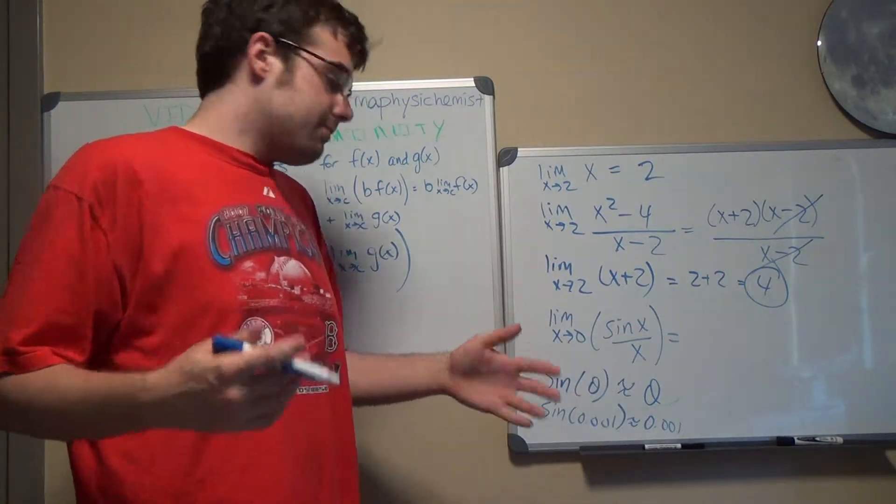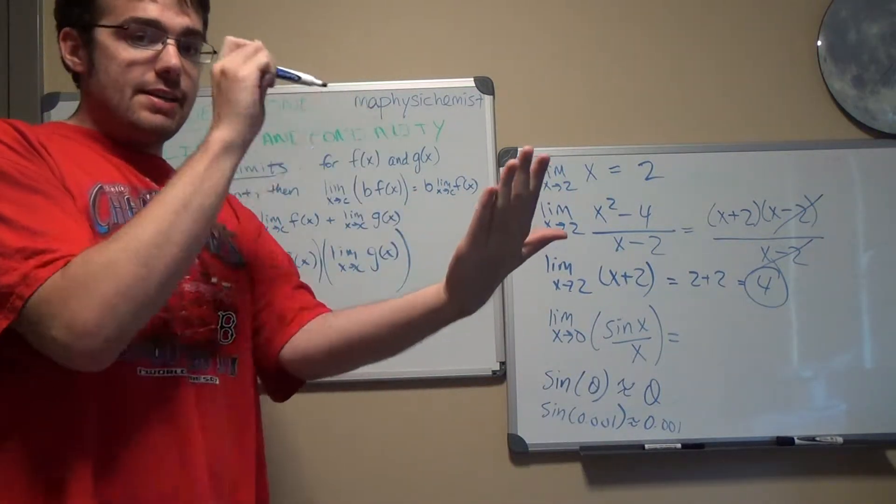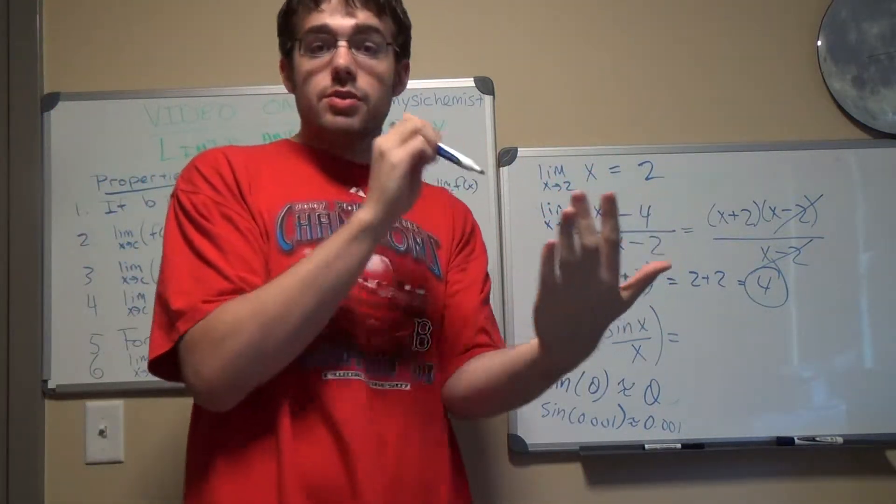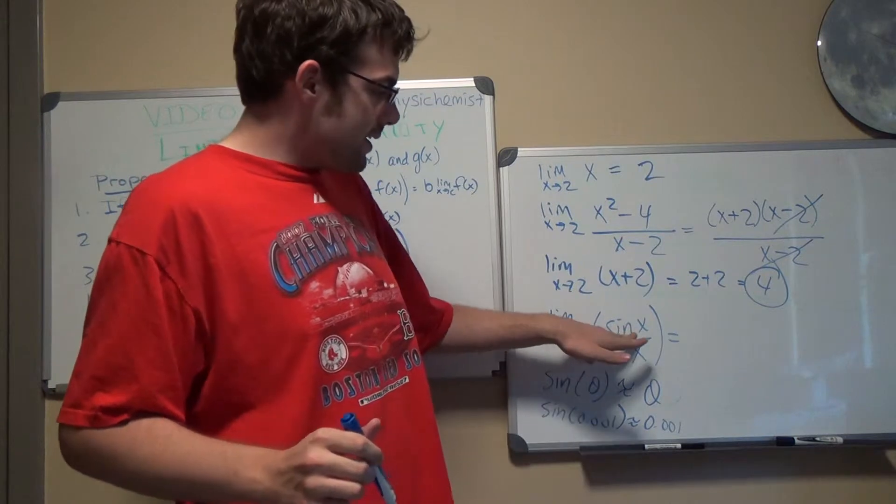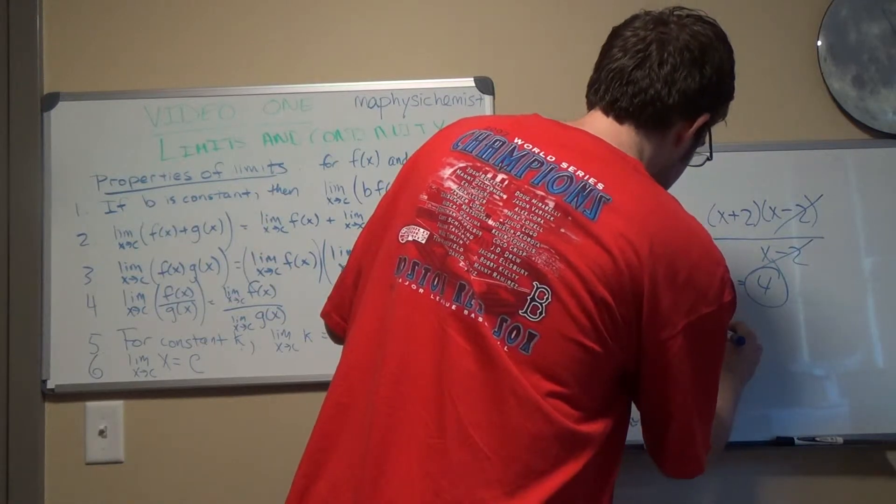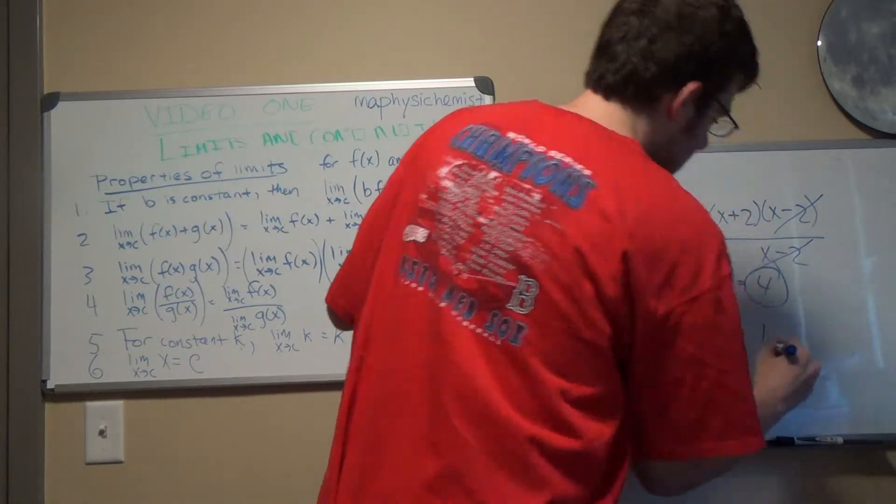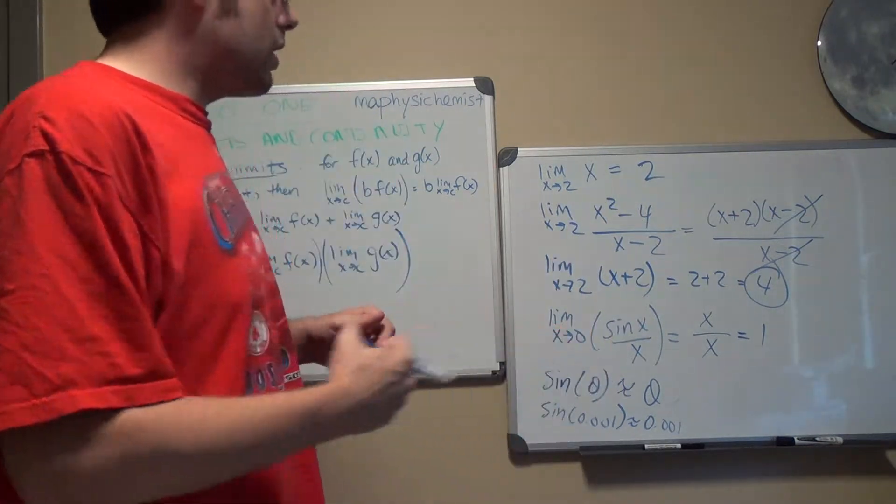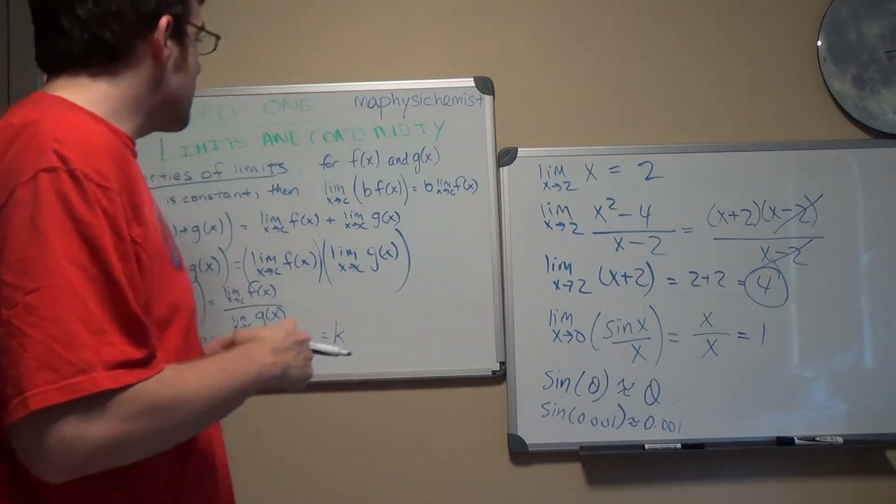So here we can come up with that approximation since x approaches 0. We're not actually at 0. We're approaching it. So we're getting very, very close. We're getting infinitesimally close to 0. Then in this case, we can say that sine of x is approximately x. And we can keep the x in the bottom. Equals 1. Now this is going to become important in the next couple of videos when I'm introducing derivatives.